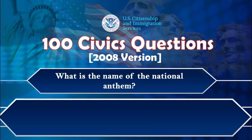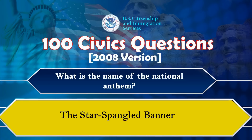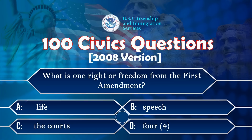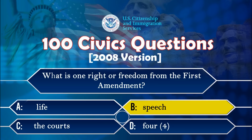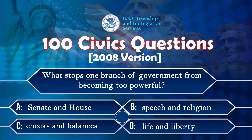What is the name of the national anthem? The Star Spangled Banner. What is one right or freedom from the First Amendment? Speech. What stops one branch of government from becoming too powerful? Checks and balances.